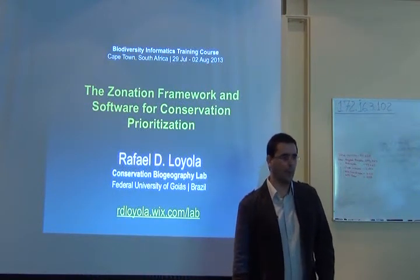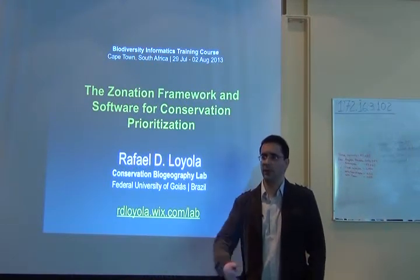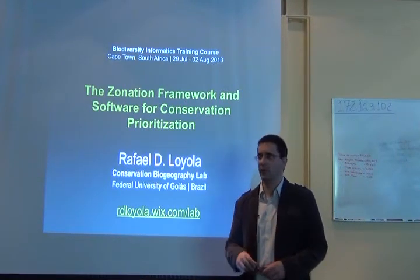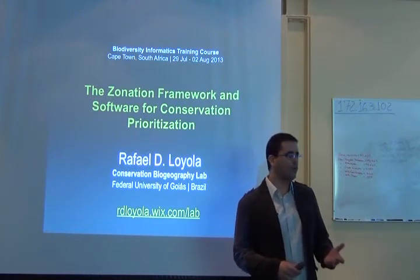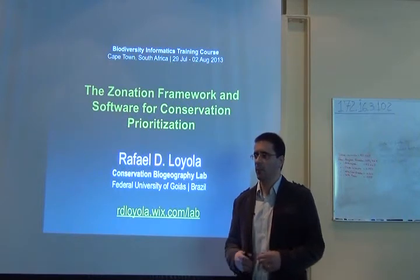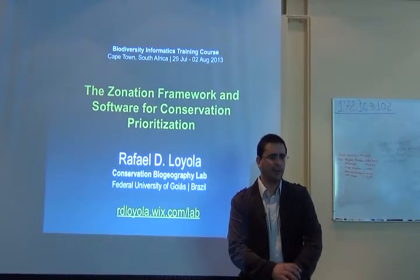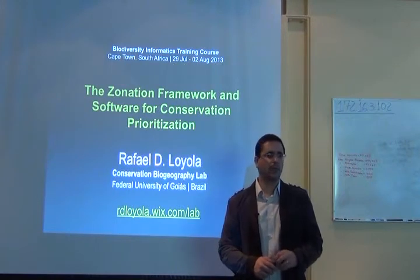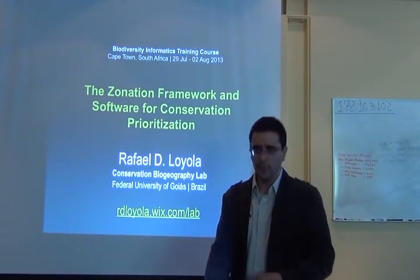I'll talk a little about Zonation, this software capable of doing all of that — like choosing what are the priority areas for conservation, excluding areas that are not useful for achieving targets, including costs, trying to find balanced solutions that will balance competing interests, and trying to achieve this kind of target. You'll see that Zonation is a kind of different problem in conservation than the two others I've previously presented to you.